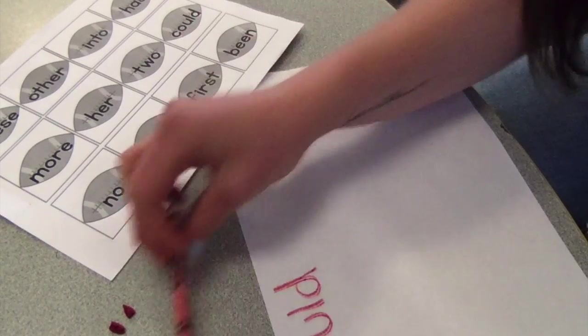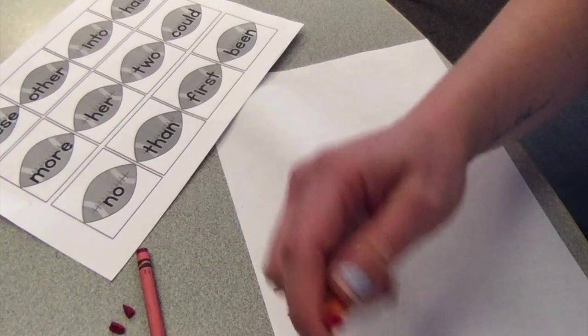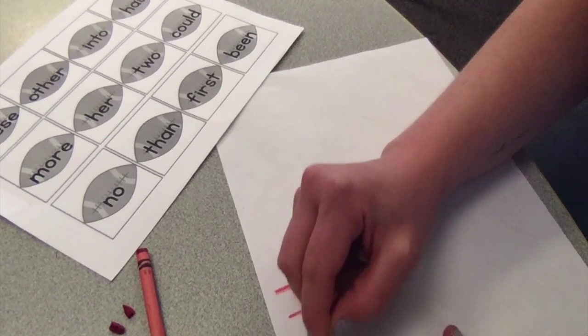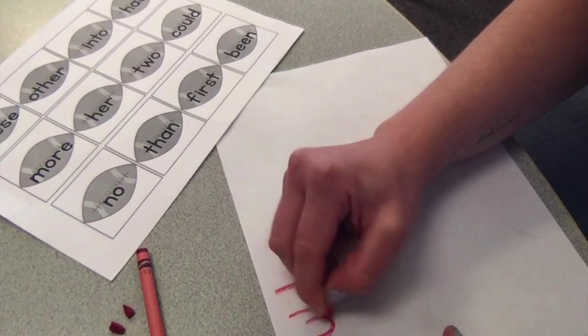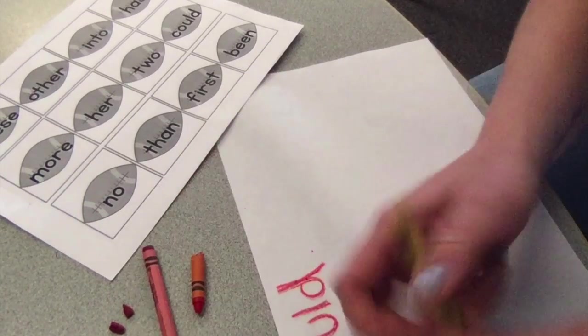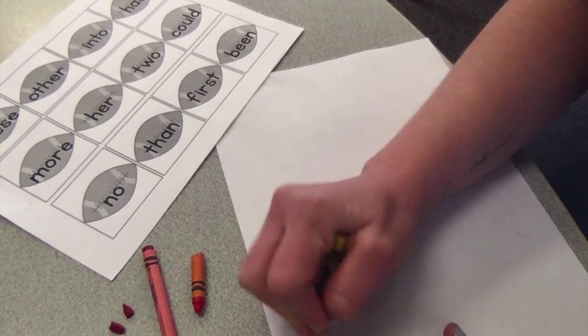So I wrote it in red. Now I'm going to choose another color, maybe an orange. And I'm going to write right over on top of it, could. See how I'm saying it while I'm writing it? Could.